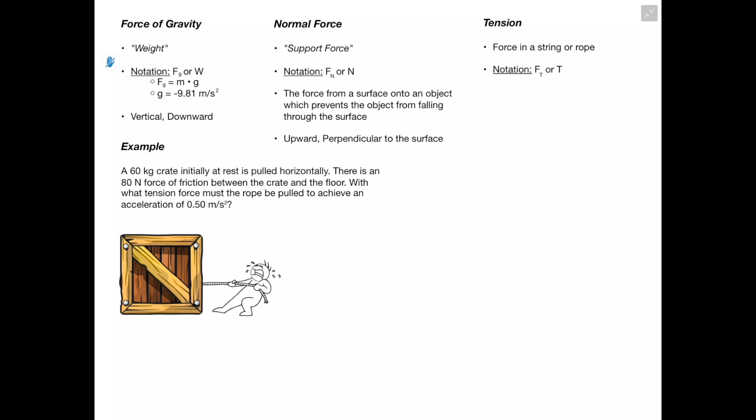Three common forces we'll see throughout the course: First, the force of gravity, also called weight (notation Fg or W), equals mass times the acceleration due to gravity (−9.81 m/s²), and always acts vertically downward. Second, normal force, also called support force (notation Fn or N), is the force from a surface onto an object preventing it from falling through — it acts upward and perpendicular to the surface, equal in magnitude to the force of gravity.